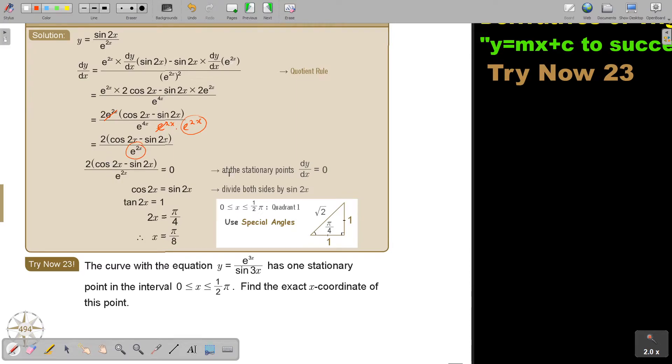Then, when it's stationary points, you put it equal to 0. Now, don't forget, it's over 1. So, if you multiply, then this will become 0. If you have 2 bracket cos 2X minus sin X equals 0, you just divide by 2. Then you end up with cos 2X. There was a 2, sin 2X. Did you see that?